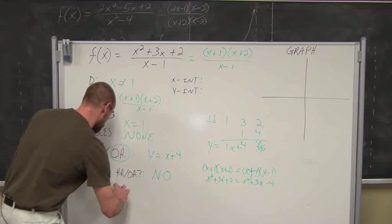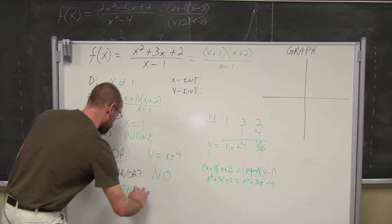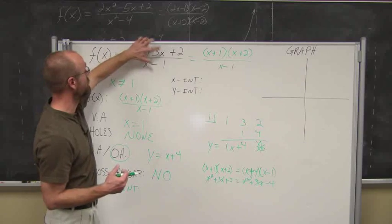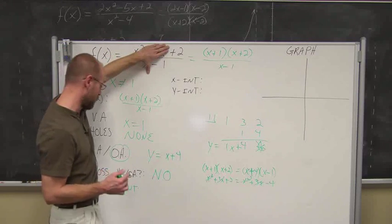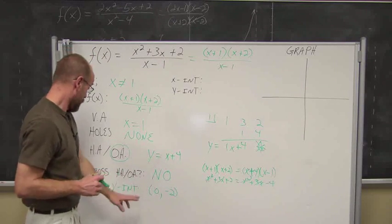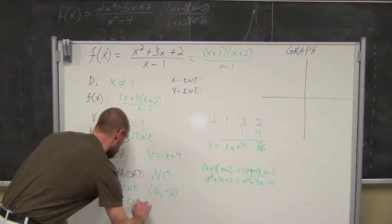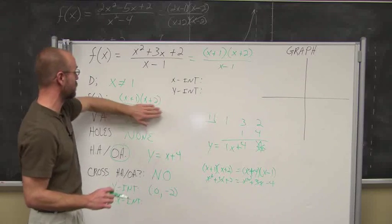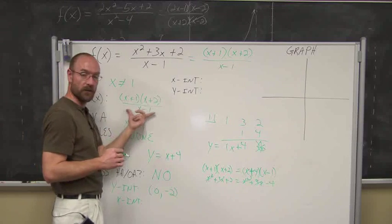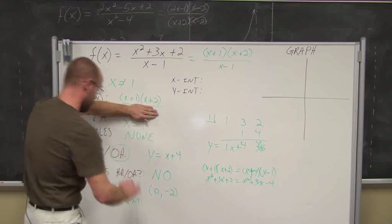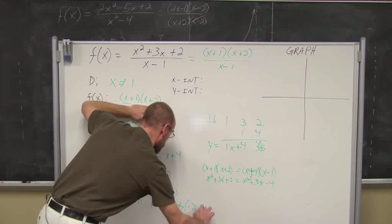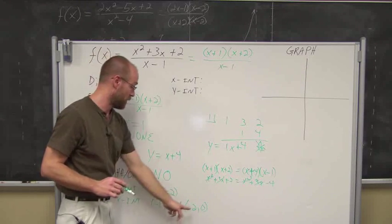Let's find some x or y-intercepts. For the y-intercept, set x equal to 0: we get 2 over negative 1, which is negative 2. So when x is 0, y is negative 2. For the x-intercepts, set the numerator equal to 0 using the factored form (x + 1)(x + 2) equals 0, giving zeros at x equals negative 1 and x equals negative 2. So the x-intercepts are at (-1, 0) and (-2, 0).